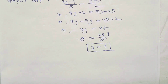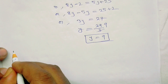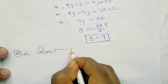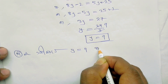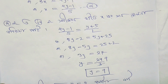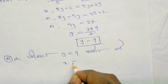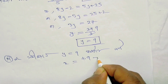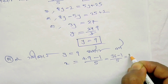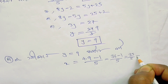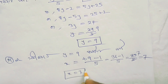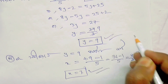y equals 9. From equation 3: x equals 4y minus 1 by 5. x equals 4 times 9 minus 1 by 5. That is 36 minus 1 by 5, which is 35 by 5, so that gives 35. So x equals 7 and y equals 9.